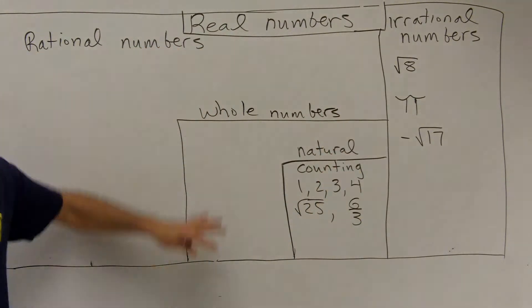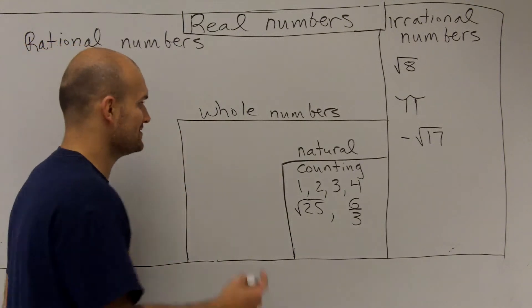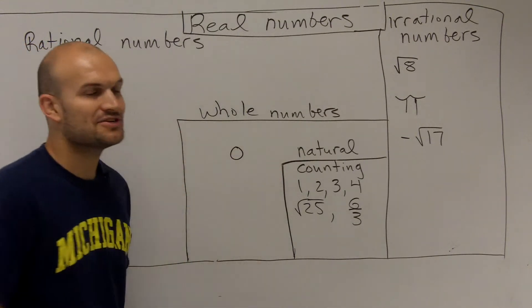Alright? And I got all this big space for all this stuff, but really all whole numbers are natural or counting numbers with the addition of zero.